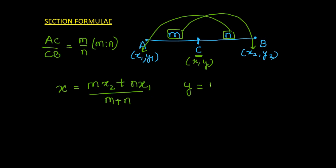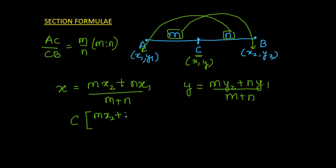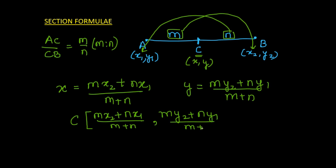Similarly, the y-coordinate is given as m into y2 plus n into y1, divided by m plus n. This gives the coordinates of point C which is dividing line AB in the ratio m is to n. The x-coordinate is (mx2 + nx1)/(m+n) and the y-coordinate is (my2 + ny1)/(m+n). This is called the section formula.